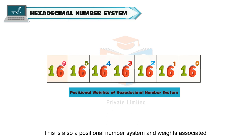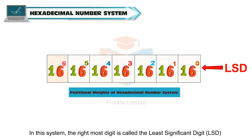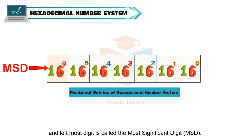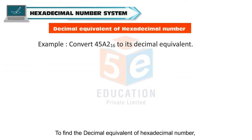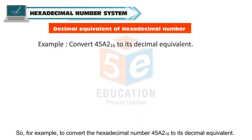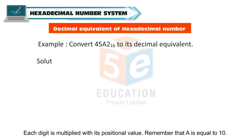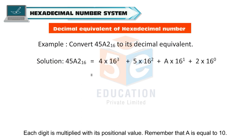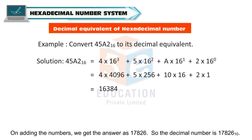This is also a positional number system and the weights associated with each position are calculated with 16 as the base. In this system, the rightmost digit is called the least significant digit or LSD, and the leftmost digit is called the most significant digit or MSD. To find the decimal equivalent of a hexadecimal number, each digit is multiplied by its positional value and then all the numbers are added. For example, to convert hexadecimal number 45A2 base 16 to its decimal equivalent, remember that A is equal to 10. On adding the numbers, we get the answer as 17826 base 10.